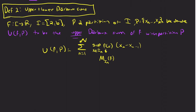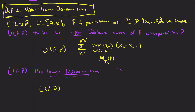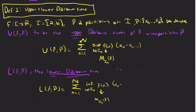Similarly, we denote L(F,P), the lower Darboux sum — you can pause here to guess what the definition is — but this is just going to be the infimum over x. Sometimes you will see this as lowercase m sub i,n of f, times x sub i,n minus x sub i,n−1. So this is the length, and this is the height of the sub-interval.